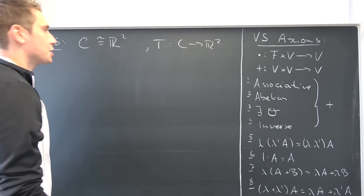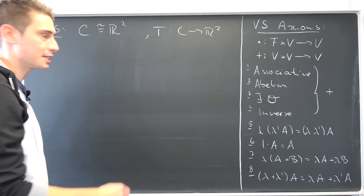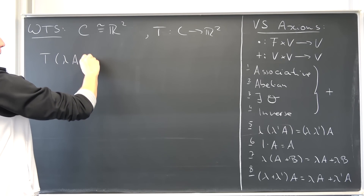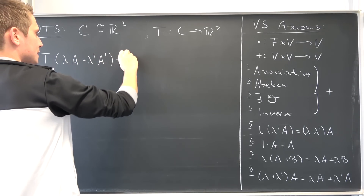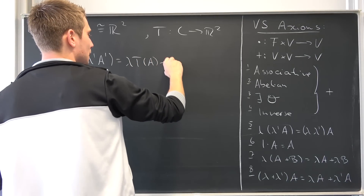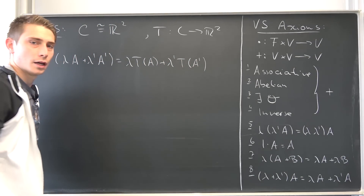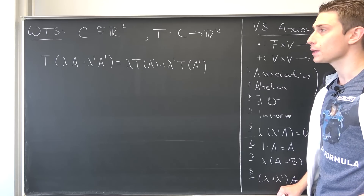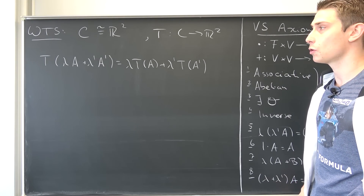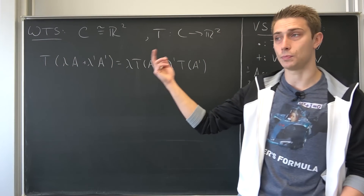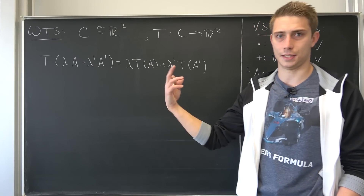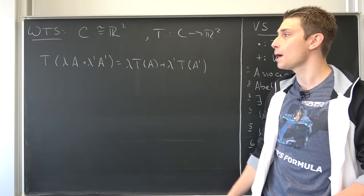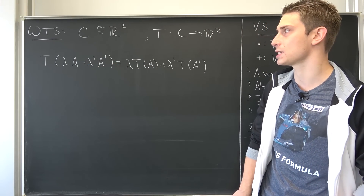What we want to check is that T is additive and homogeneous — meaning T(λa + λ'a') equals λT(a) + λ'T(a'). This is the linearity condition we are going to show. We define a as the matrix [a, −b; b, a] and a' as [c, −d; d, c], and λ and λ' are simply scalars. This has to hold for all scalars and all matrices.